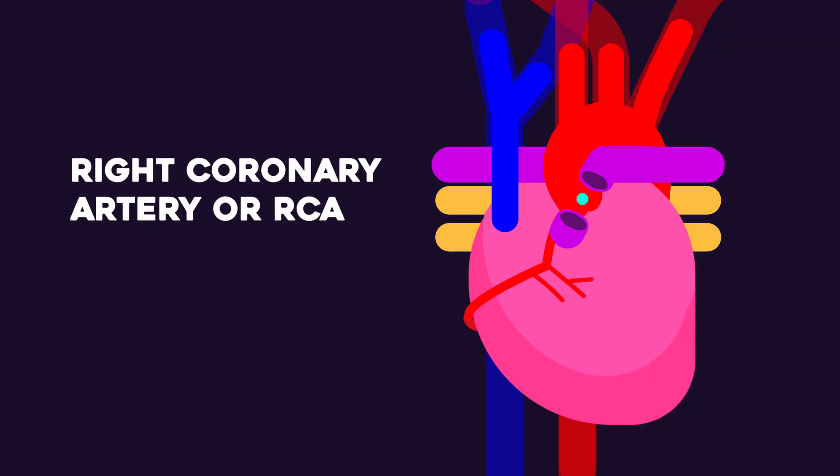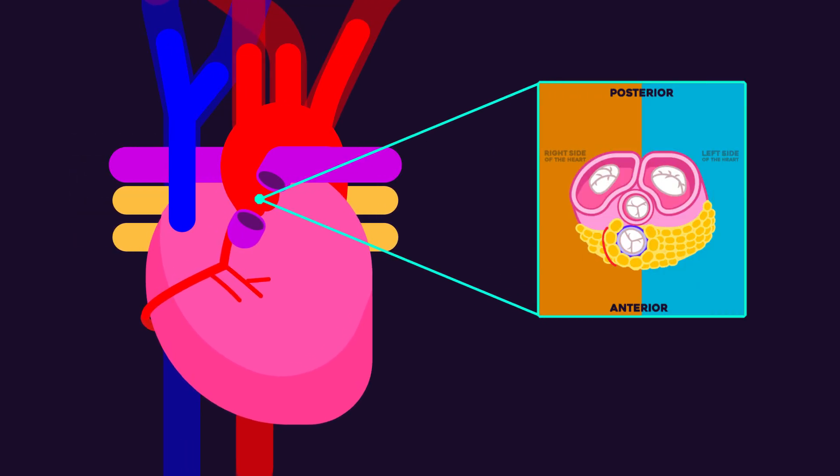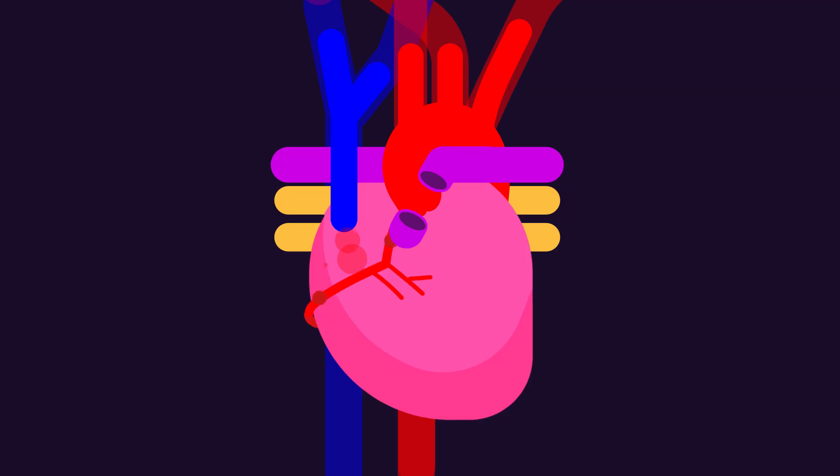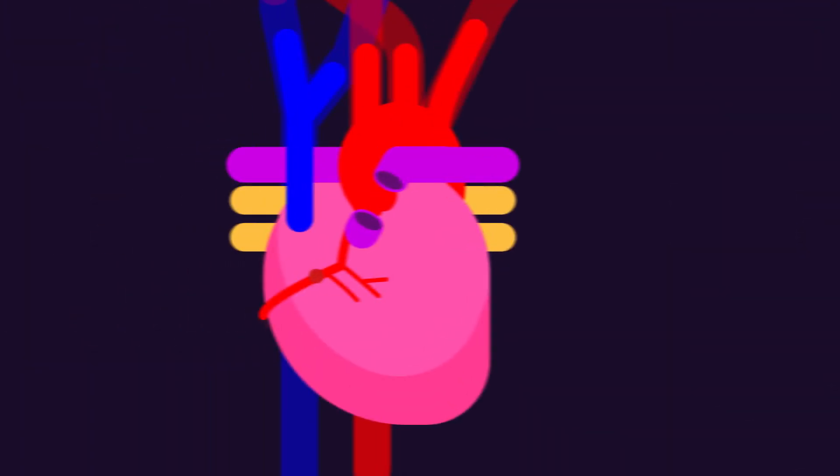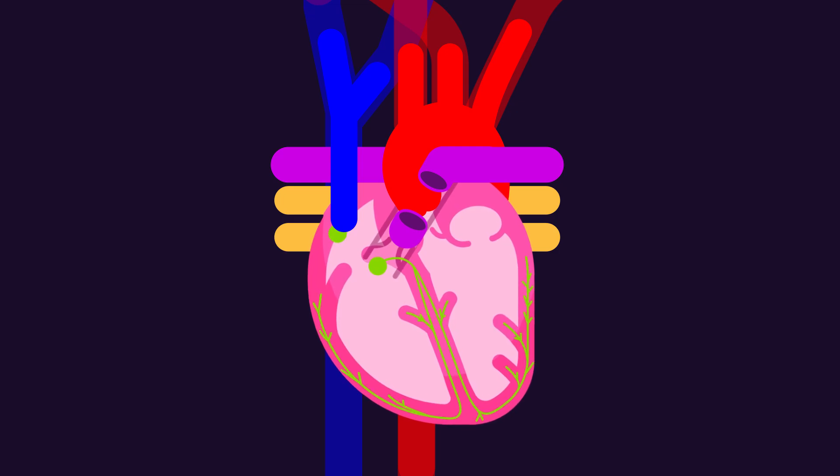The right coronary artery RCA distributes blood to the right side of the heart, which includes the right atrium, the right ventricle, and some part of the left ventricle. In addition to the right heart, RCA also supplies the heart conduction system.